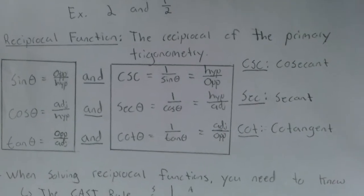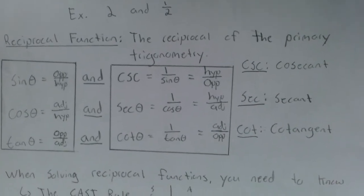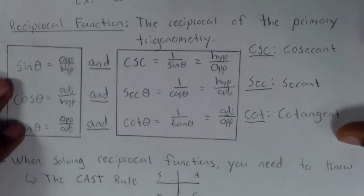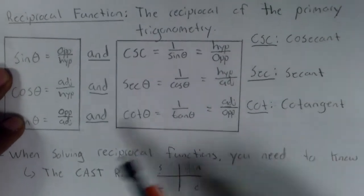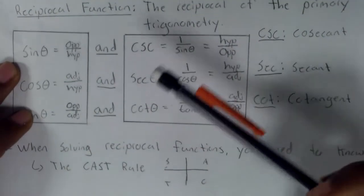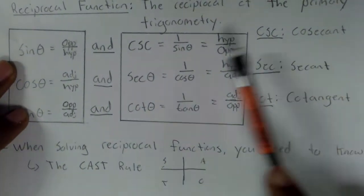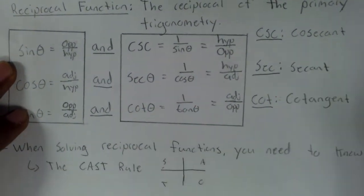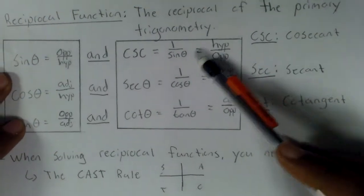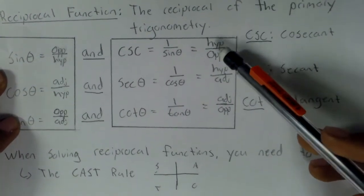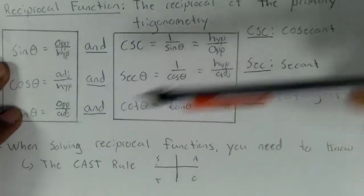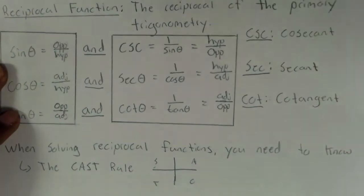A reciprocal function is the reciprocal of the primary trigonometry ratios. So we know that sine of theta is equal to opposite over hypotenuse. The reciprocal of that would be CSC, which is cosecant. It would be 1 over sine of theta or equal to hypotenuse over the opposite. So this ratio just flipped over.